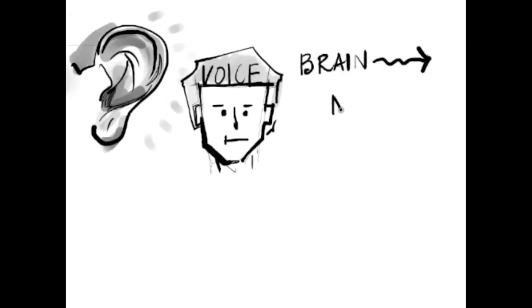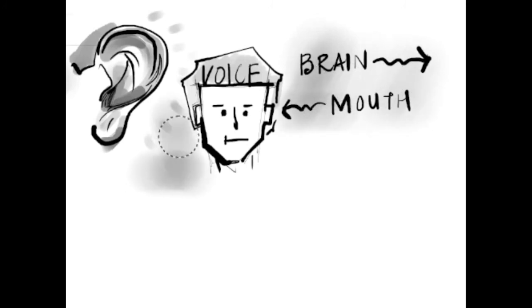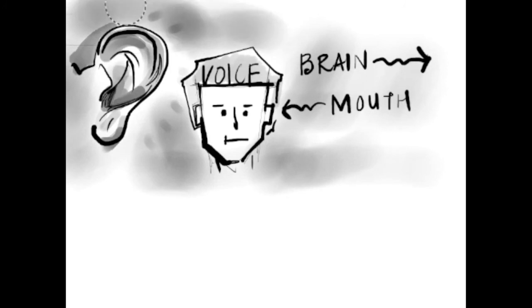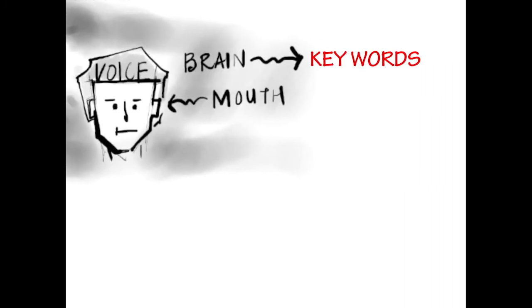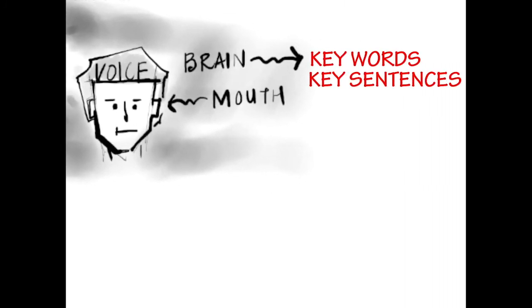Remember, your brain moves way faster than your mouth. So if you imagine that your brain is moving quickly over these words — say, lots of details — there would be no way that your mouth could keep up. Instead, your mouth would make sort of a mumble sound. But by hearing or saying with your brain voice the key words or key sentences, you're indicating to yourself: this is what's important.